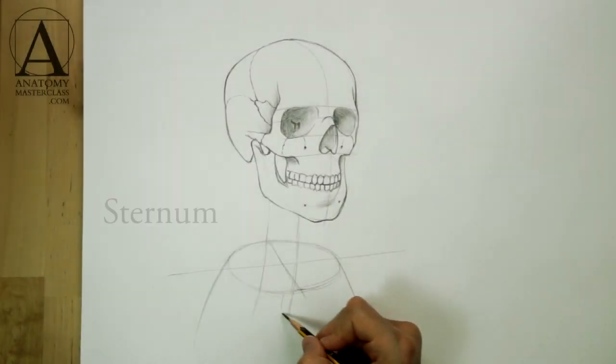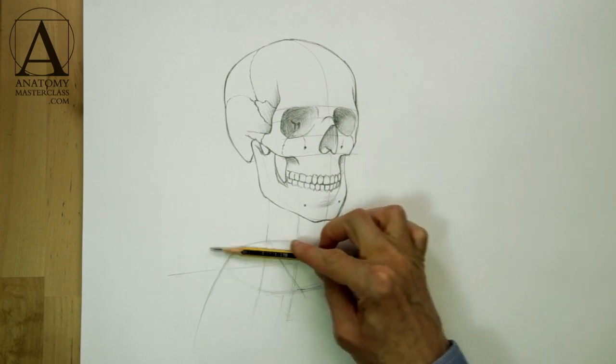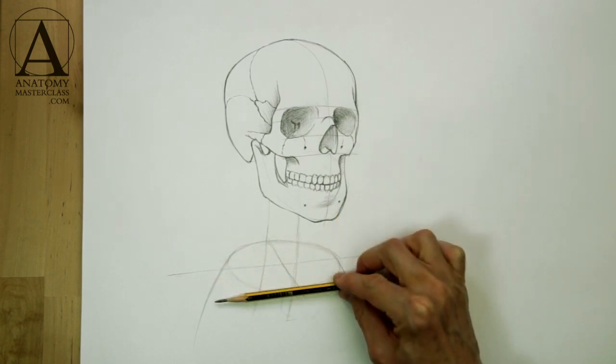The breastbone, or sternum, follows the same perspective as the shoulder axis. I easily measure this axis slope using a pencil.